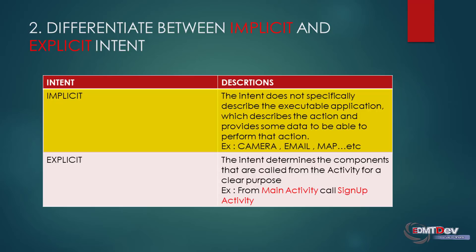Examples of implicit intent include Camera, Email, and Map. Explicit intent determines the components that are called from the activity for a clear purpose — for example, from main activity calling the sign-up activity.